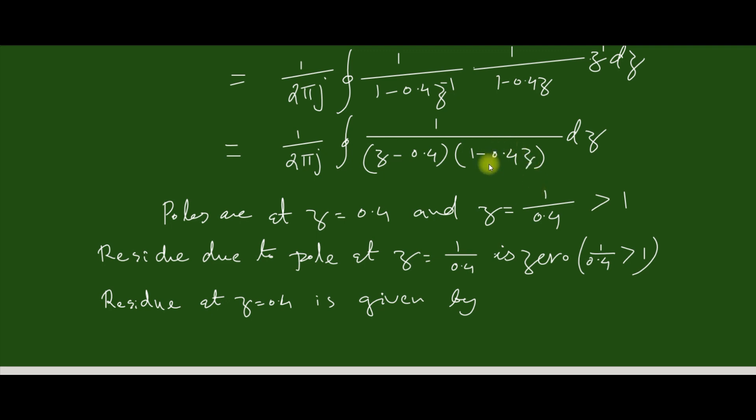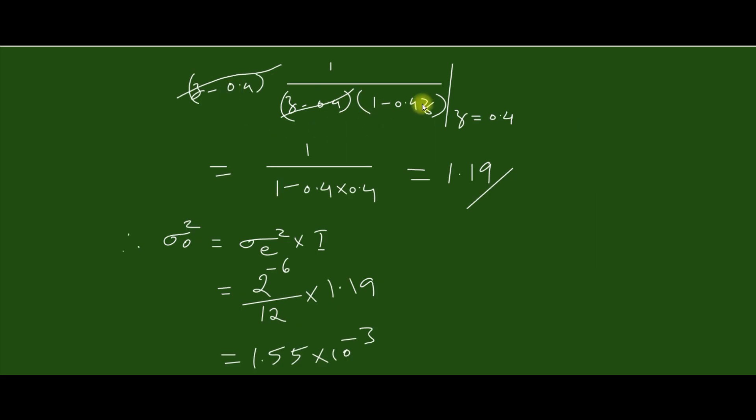So we can compute the residue due to pole, which we can easily compute by this form: z minus 0.4 and z minus 1/0.4, that is 1/(1 minus 0.4) where z = 0.4.